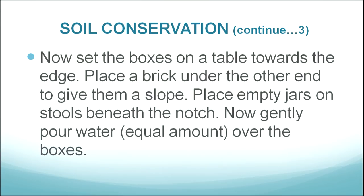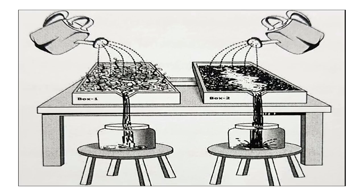Set the boxes on a table toward the edge and place a brick under the far end to create a slope. Place empty jars on stools beneath the notch. Gently pour equal amounts of water over both boxes. In box two — the bare box — muddier water collects in the jar. In box one — the vegetated box — much cleaner water comes out. When children do this themselves, they understand what soil conservation means.